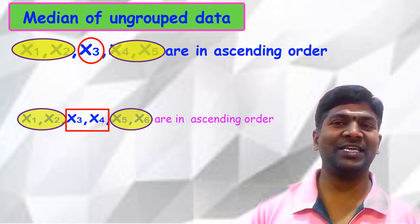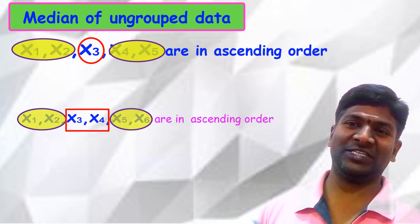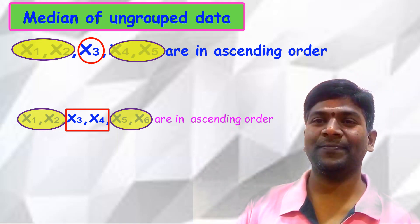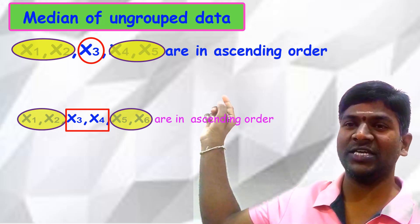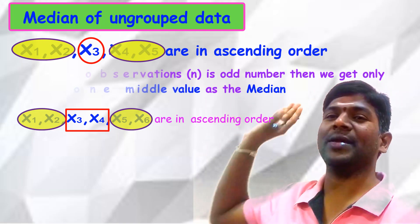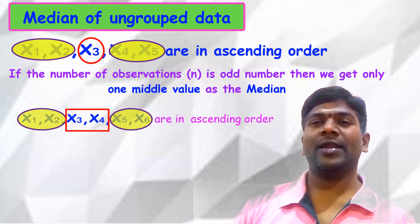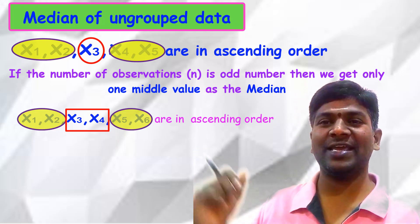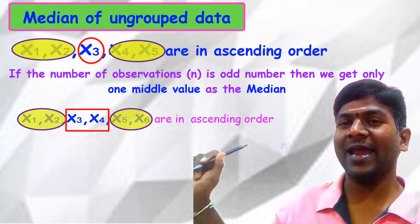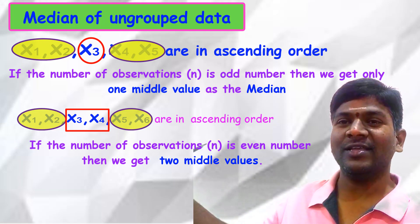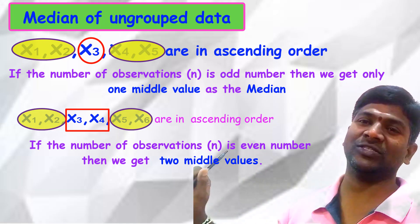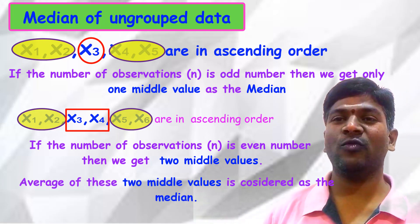When the number of observations is an odd number — like five — there is only one mid-value; it itself is the median. When the number of observations is an even number — like six — there are two mid-values: the third and fourth observations. In that case, we find the average of the two mid-values to get the median.